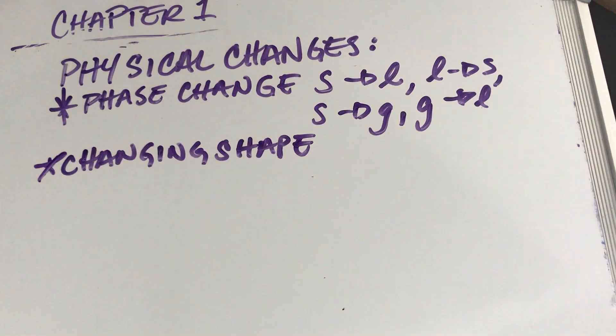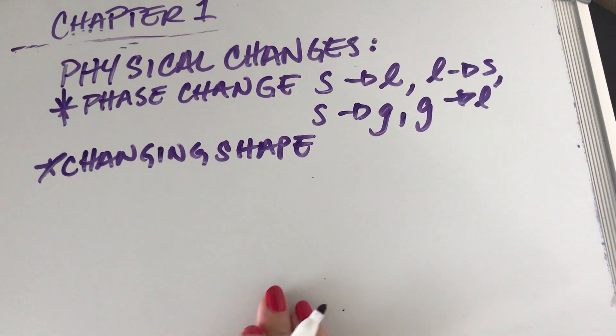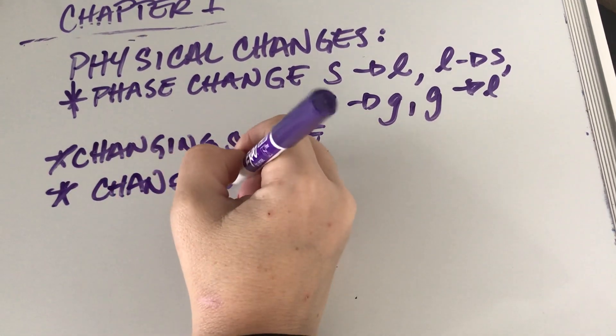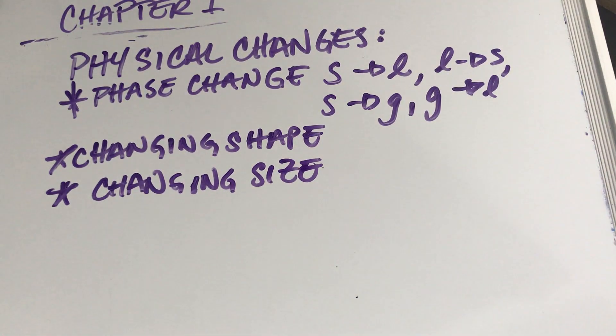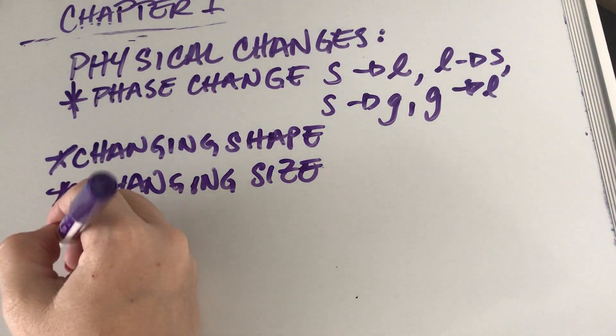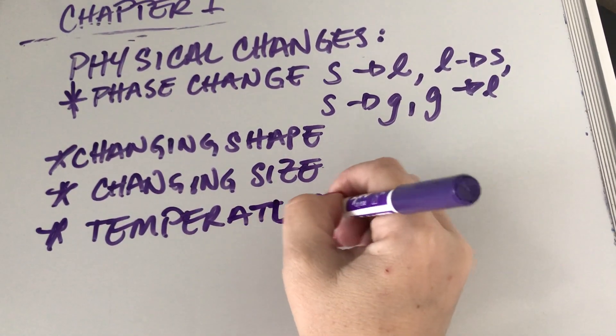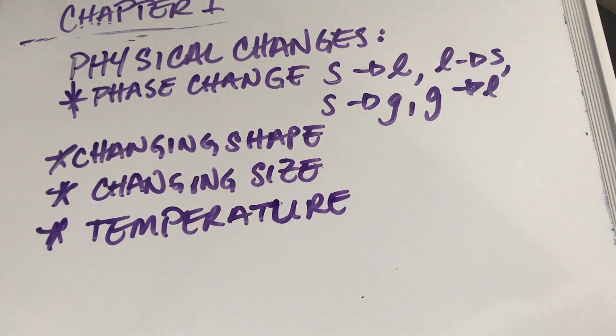Other physical changes that you can have would be things like changing shape, changing size, changing temperature. So these would all be examples of physical change. Do mixing and suspension and stuff like that count as well? That gets a little more complicated. We're going to get into phases in detail in chapter eight. So let's hold off on that question for now. Other questions about physical changes?